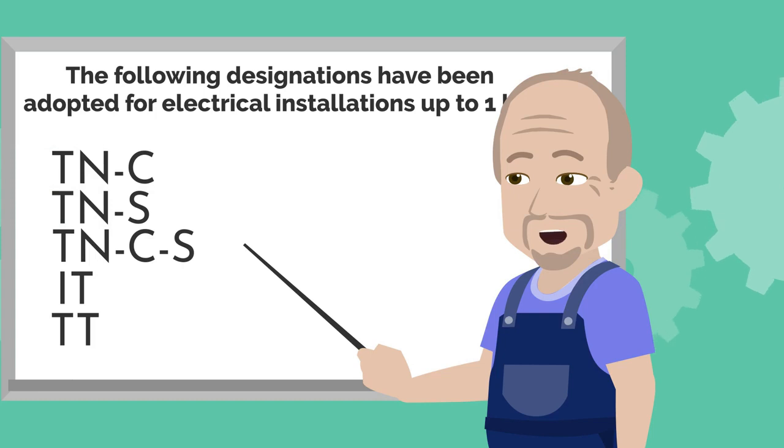T stands for the grounded neutral conductor. I means the insulated neutral conductor. The second letter indicates the grounding type of appliance's exposed parts. T means that exposed conducting elements are grounded. N indicates that conducting elements are connected to the grounded neutral conductor, while letters C and S describe the state of zero protective conductors. C means that they are connected. S stands for the separated conductors.